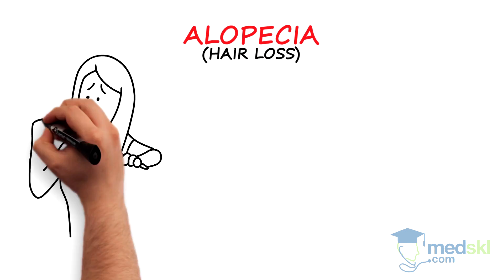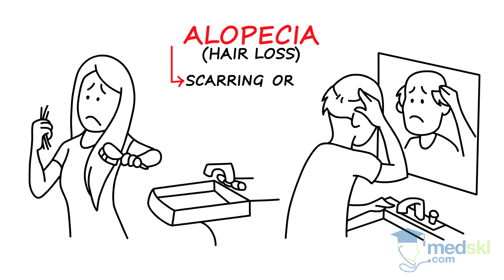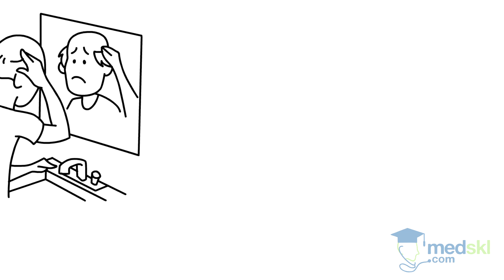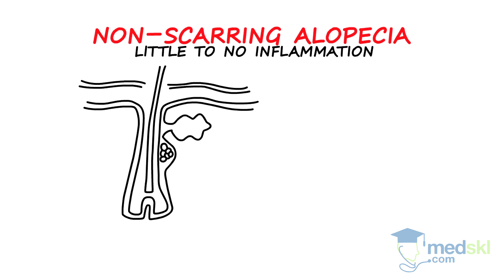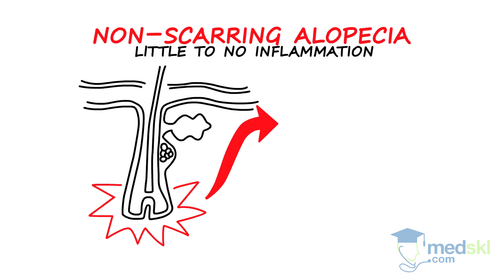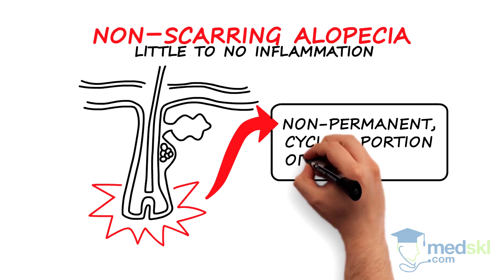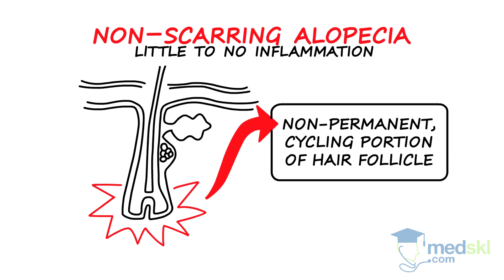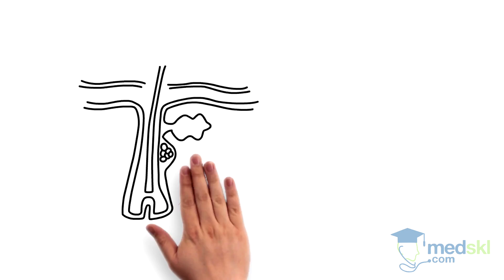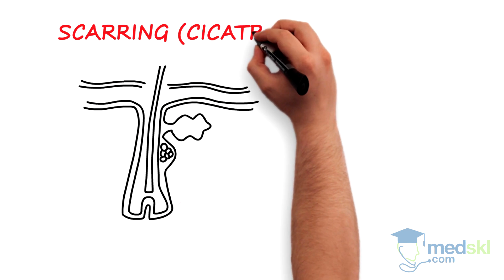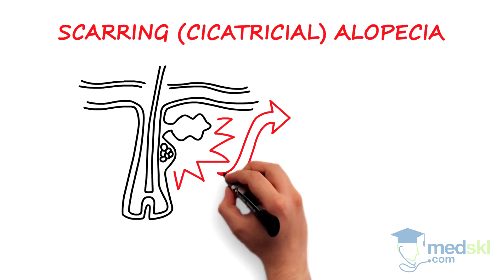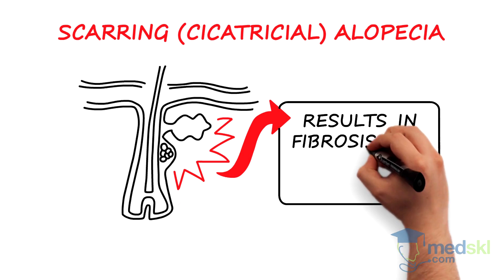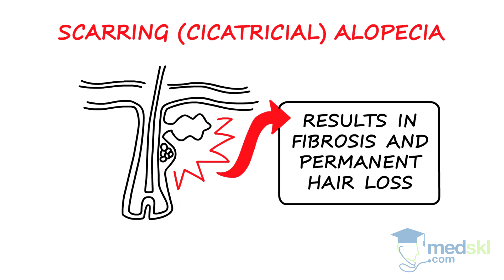Alopecia, or hair loss, can be broadly classified as scarring or non-scarring. In non-scarring alopecia, there is little to no inflammation or, as in alopecia areata, inflammation is directed at the non-permanent cycling portion of the hair follicle below the bulge stem cell region. Scarring alopecia, also known as cicatricial alopecia, is characterized by damage to the stem cell bulge region of the hair follicle resulting in fibrosis and permanent hair loss.